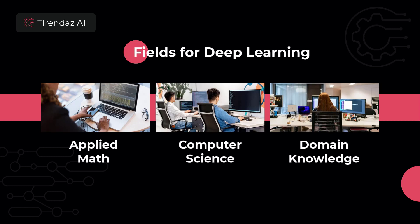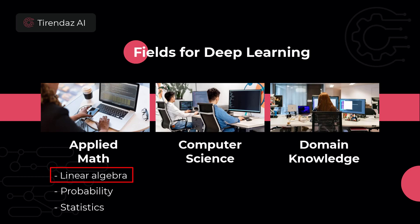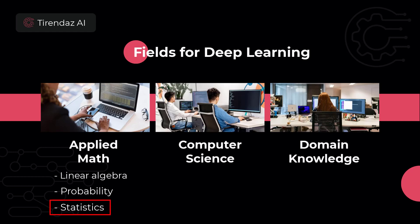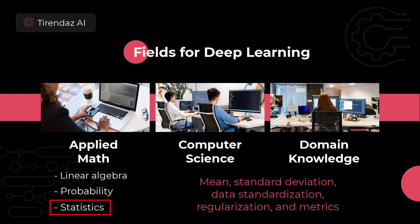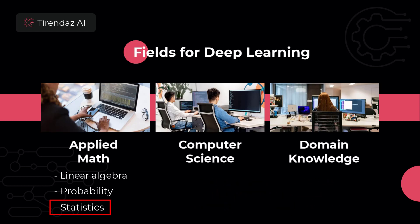Applied mathematics includes, in particular, linear algebra, probability, and statistics. Linear algebra is fundamental, as deep learning models are based on matrix computations. Probability is used to understand probability distributions of data, and deep learning models predict such distributions — so it is important to know probability theory. Statistics is used to analyze, explore, and summarize data. Techniques such as mean, standard deviation, data standardization, regularization, and metrics are frequently used in deep learning projects, so knowing fundamental statistical techniques helps you build better models.